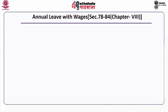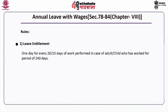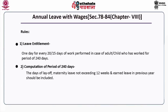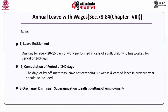Annual leave with wages provisions are stated in Sections 78 to 84 under Chapter 8. Leave entitlement: 1 day for every 20 days of work performed in the case of an adult, and 1 day for every 15 days of work performed in the case of a child, who has worked for a period of 240 days. The computation of the period of 240 days includes days of layoff, maternity leave not exceeding 12 weeks, and earned leave from the previous year. Leave entitlement also applies in cases of discharge, dismissal, superannuation, death or quitting of employment.